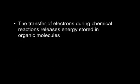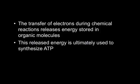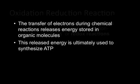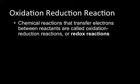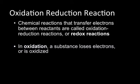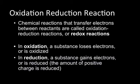In any chemical reaction, metabolic or not, the transfer of electrons during the reaction releases energy stored in organic molecules. This released energy is ultimately used to synthesize ATP. We have a name for the reactions when electrons are transferred between reactants — it's called an oxidation-reduction reaction, or redox for short. In oxidation, a reactant loses electrons or is said to be oxidized. In reduction, a substance gains electrons or is said to be reduced.